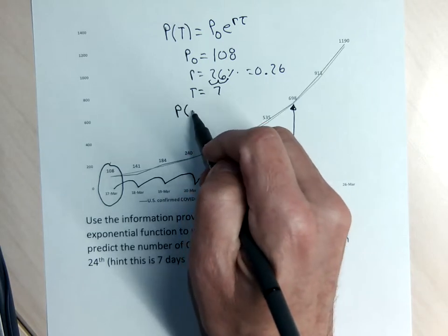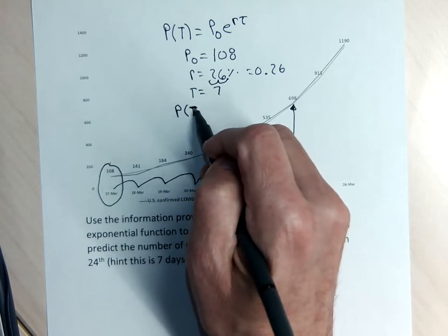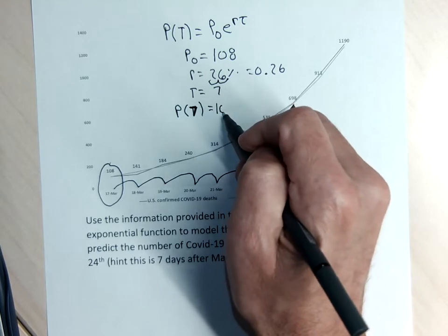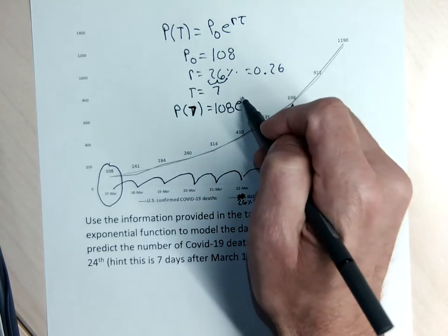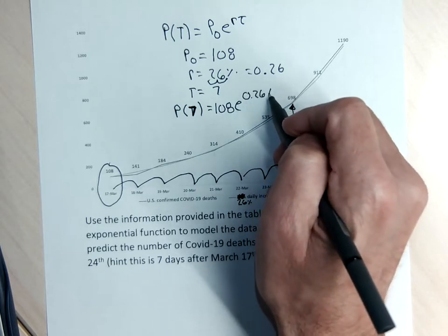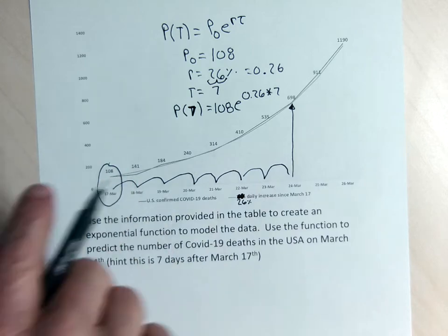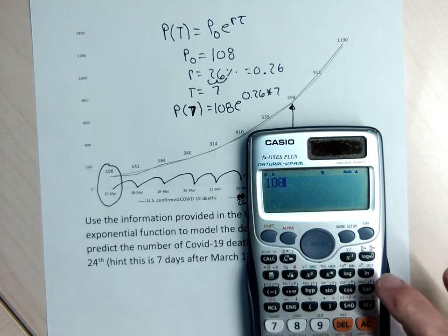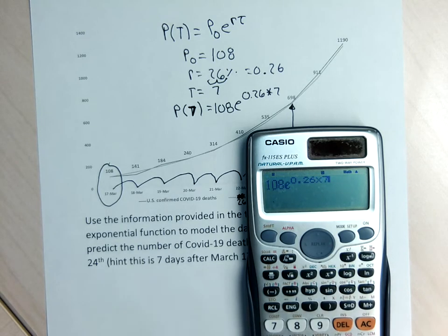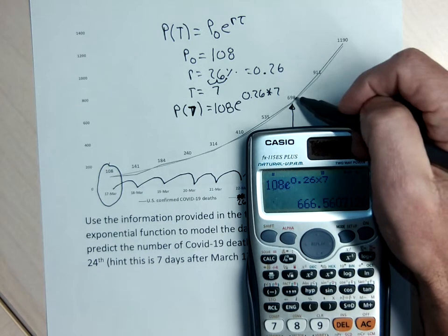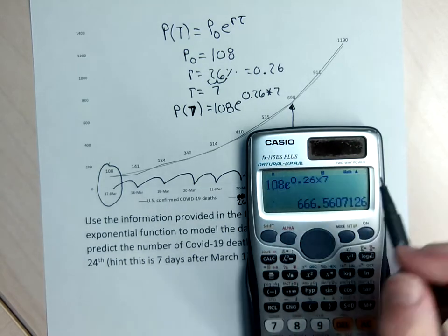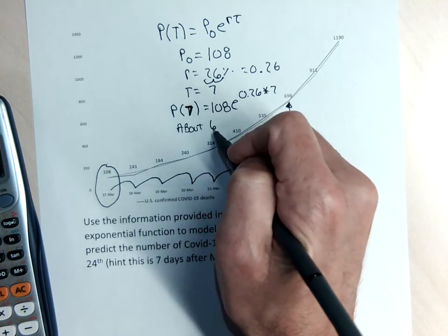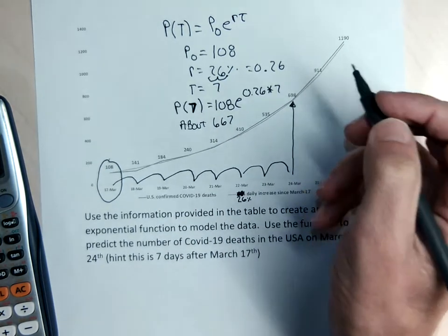The number of people expected to die of the coronavirus 7 days after March 17th — which is March 24th — is the starting number, 108 people, times E to the R, which is 0.26, times 7. Entering 108 times E to the 0.26 times 7 into the calculator gives me 667. That's a little bit shy of the actual 698 deaths recorded, because this is based on a rounded decimal. The formula is predictive — you don't expect to get exact numbers.